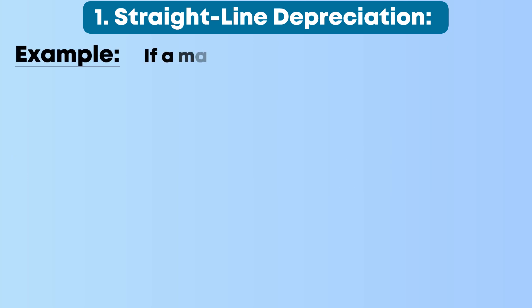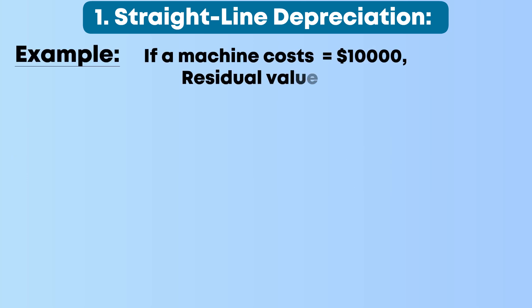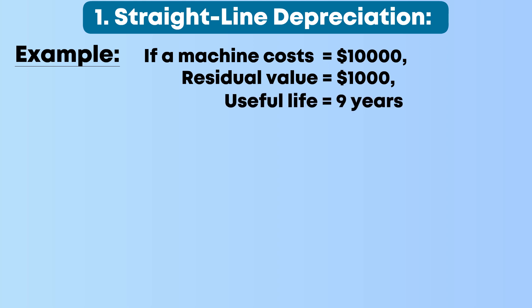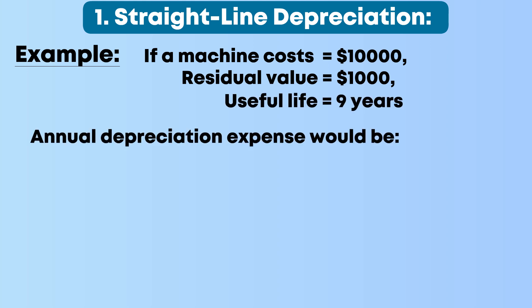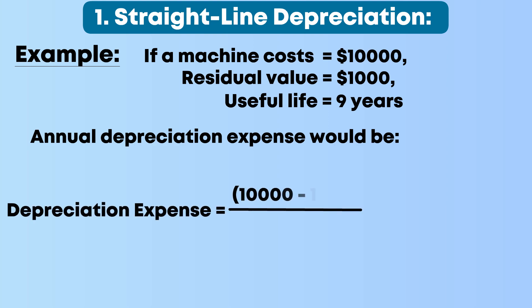For example, if a machine costs $10,000, has a residual value of $1,000, and a useful life of 9 years, the annual depreciation expense would be: Depreciation Expense = ($10,000 − $1,000) ÷ 9 = $1,000.